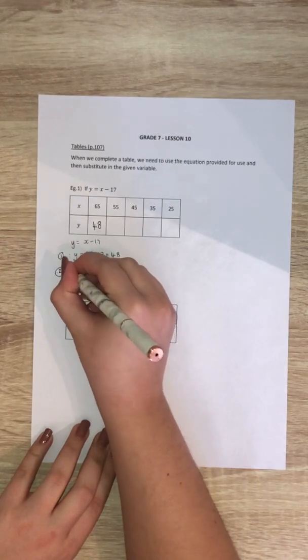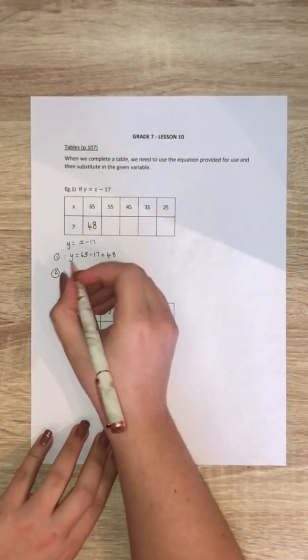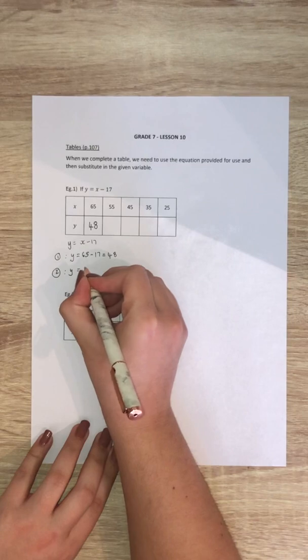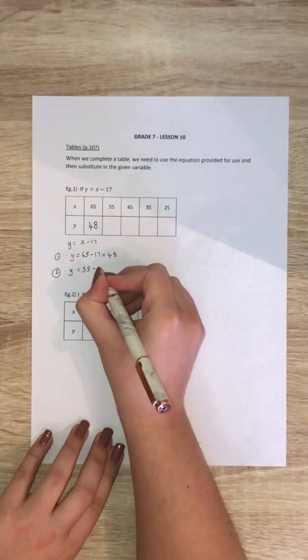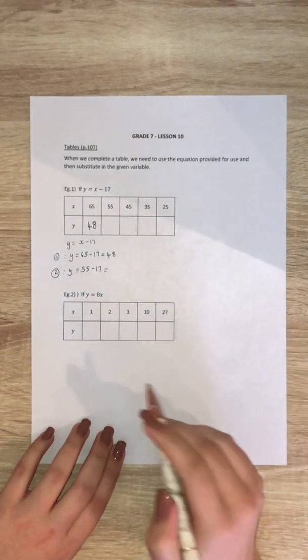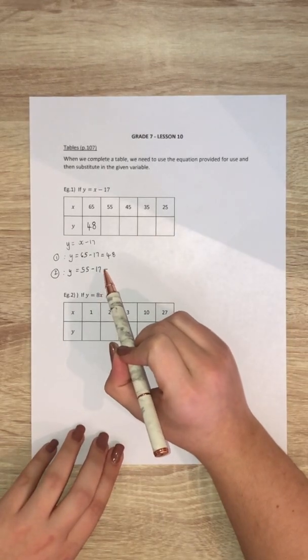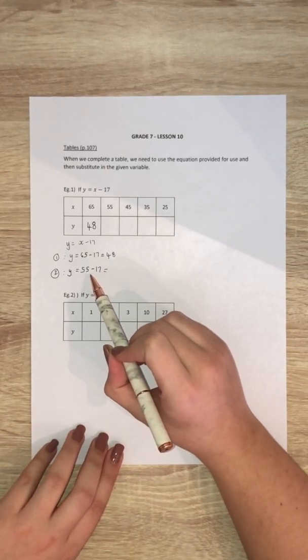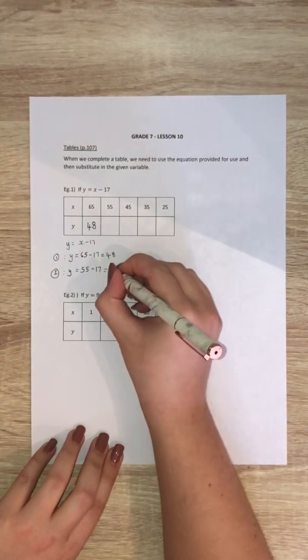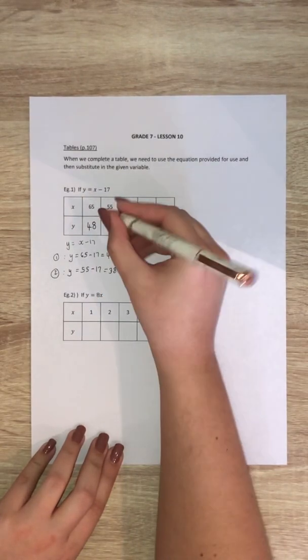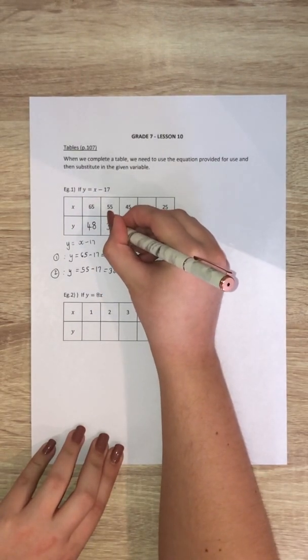Then we can do the second one and our x value is 55. So it's y equals 55 minus 17. 55 minus 10 is 45, then we subtract 7 and that is 38. So my next value is 38.